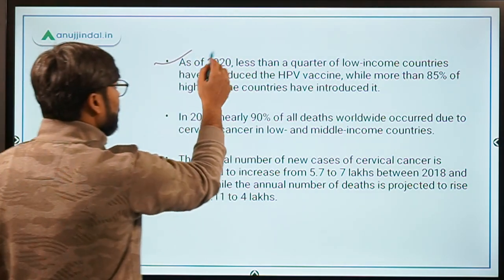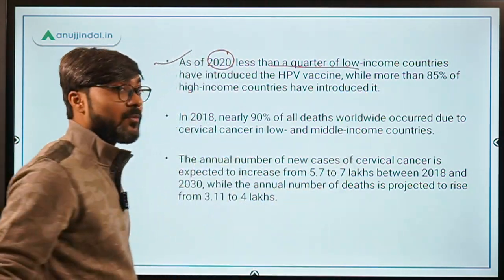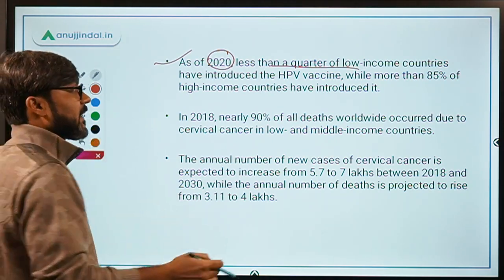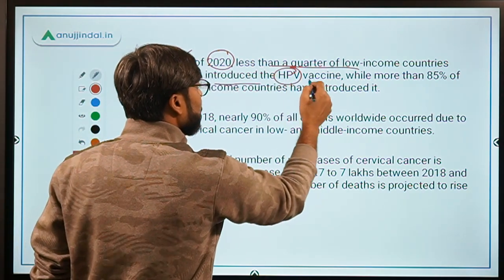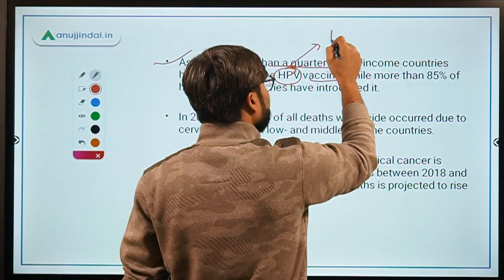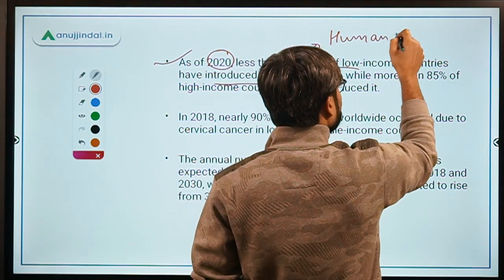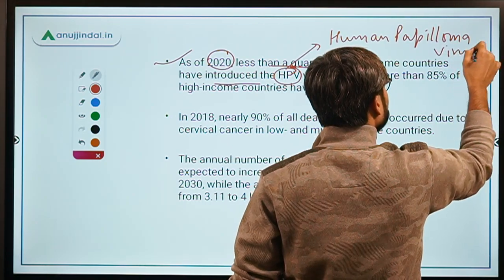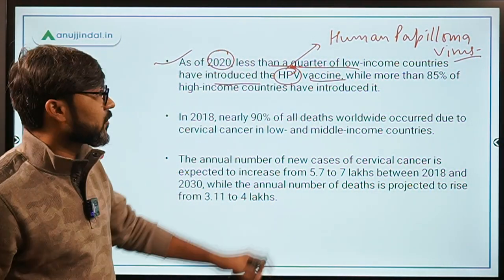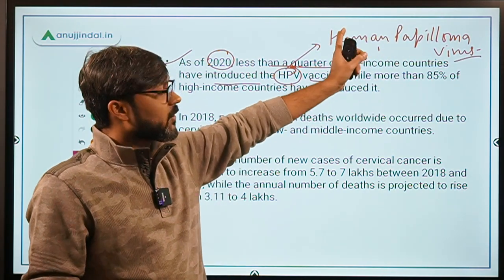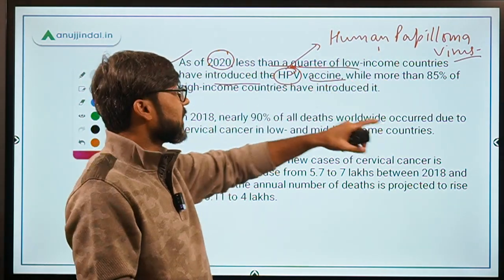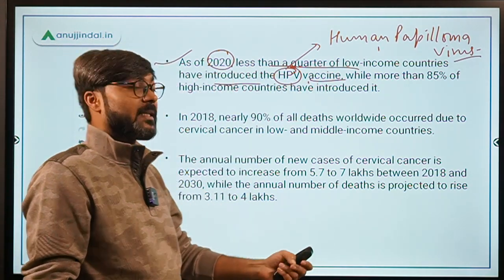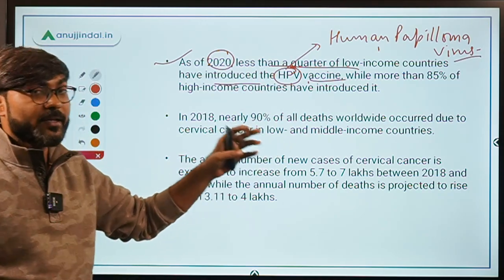As of 2020, less than one-fourth of low-income countries have introduced the HPV vaccine. HPV stands for Human Papilloma Virus, which causes cervical cancer. There is a vaccine available for this virus. In contrast, more than 85% of developed countries have the prevalence of this vaccine.